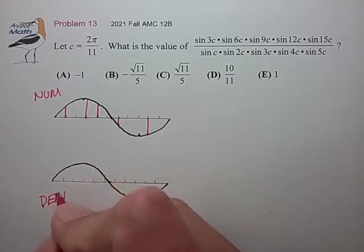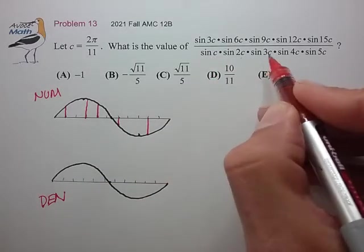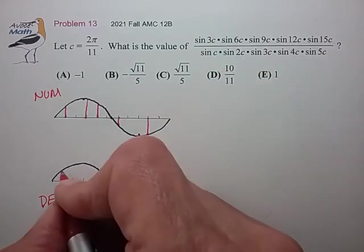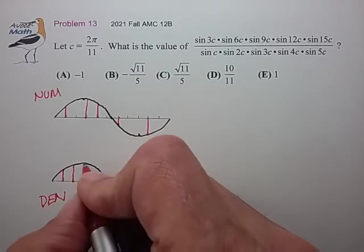And in the denominator, we just have 1c, 2c, 3c, 4c, 5c, so that's these five values.